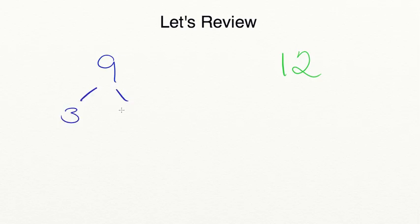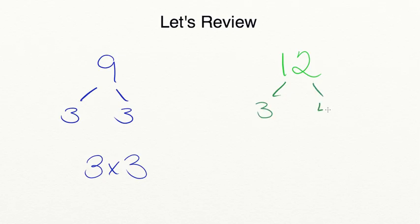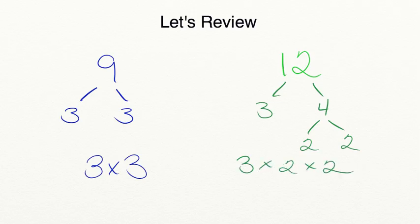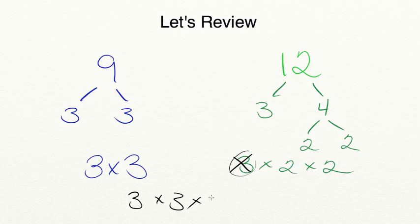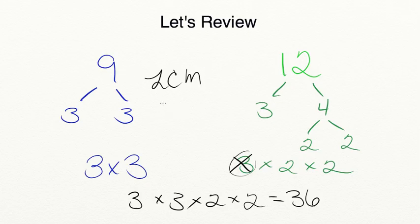Nine is simple: three times three equals nine, so its prime factorization is three times three. For twelve, three times four — and since four isn't prime, we break it to two times two — giving three times two times two. To find the LCM, we write three times three, then cross out the shared three, and multiply by the remaining two times two. Three times three equals nine, times two equals eighteen, times two equals thirty-six. So the least common multiple for nine and twelve is thirty-six.